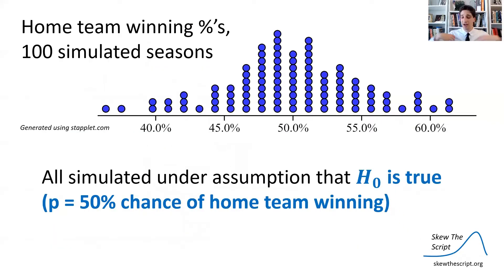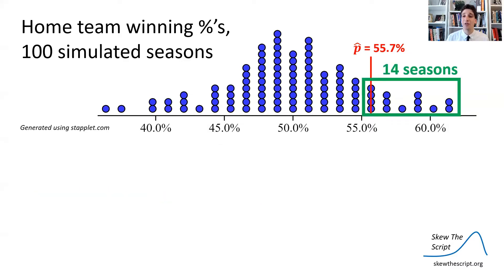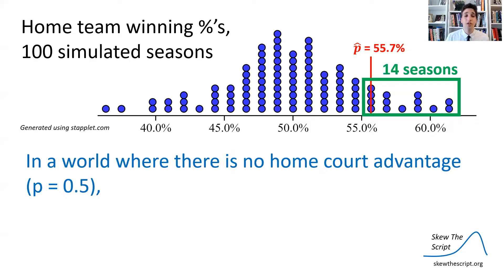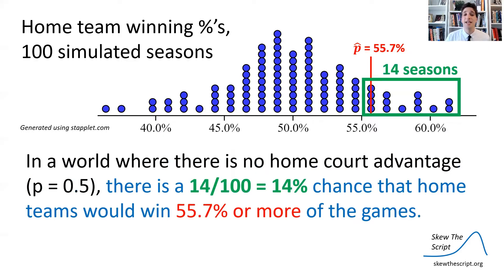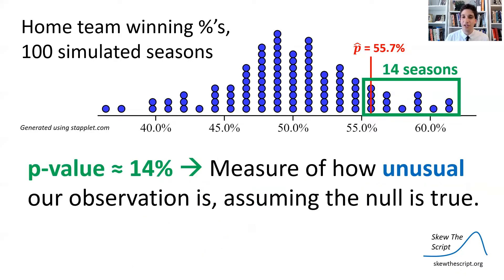So if we did this a hundred times — simulated a hundred random seasons — you'll get a distribution that looks something like this. This is assuming the null is true. We can see we're centered right around 50% with some spread. Remember, our observation in the real world was that the home teams won 55.7% of the time in the actual NBA bubble — on the higher end of this distribution. There are 14 out of these hundred seasons in which the home team won more often than what we saw by chance alone. So in a world where there is no home court advantage, there is a 14 out of 100 — a 14% chance — that home teams would win 55.7% or more of their games by chance alone. This 14% is the p-value, and the p-value measures how unusual our real-world observation was assuming the null was true.